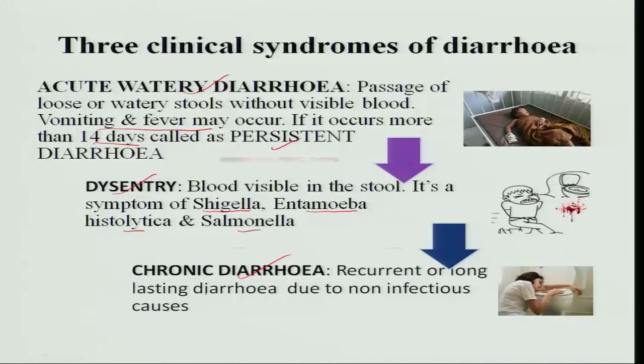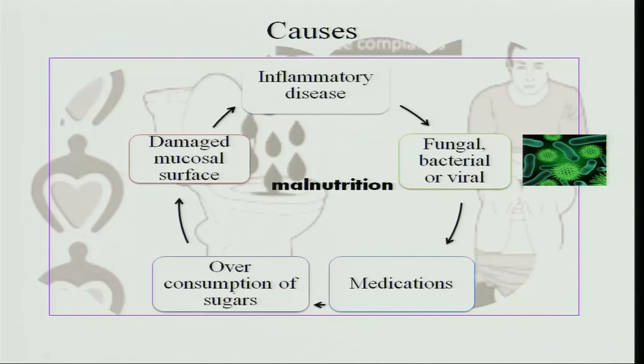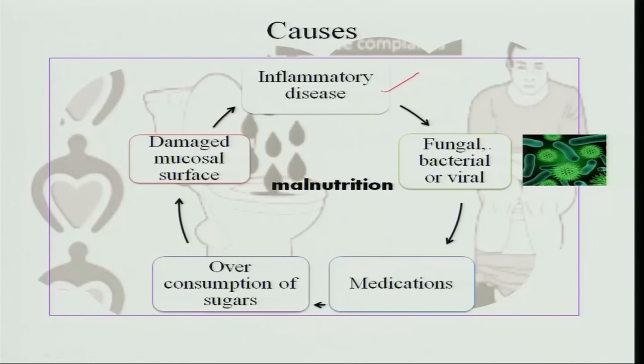Chronic diarrhea is recurrent and long-lasting, and it is mostly non-infectious. The causes of diarrhea include inflammatory disease — if the intestines are inflamed there is no proper assimilation and breakdown of food, so it goes out. Fungal, bacterial, or viral infections also cause it. Over-consumption of sugars also causes diarrhea because, due to osmotic conditions, it pulls water out from the cells.